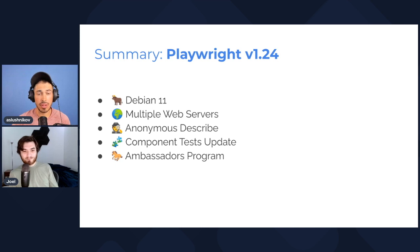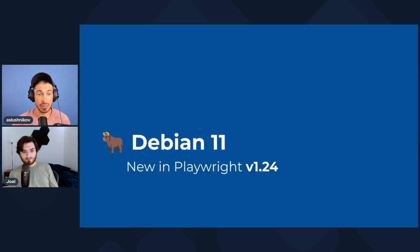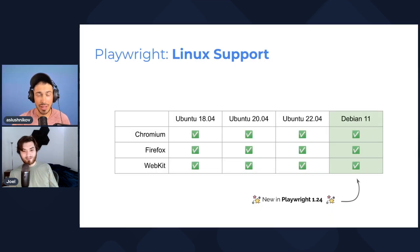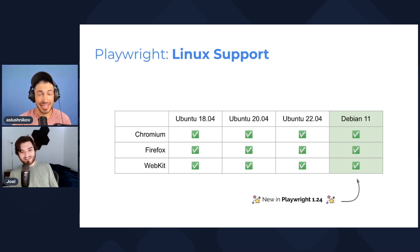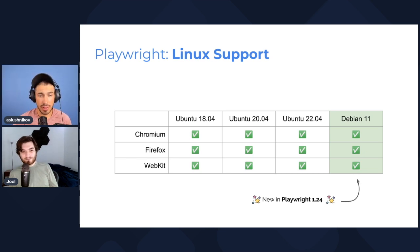Let's jump right into Debian 11 — the Debian 11 Bullseye support — which we now have on the board. This is a big deal. We've only done Ubuntu as the official supported platform for a very long time, and Debian is actually pretty popular in the Python community.